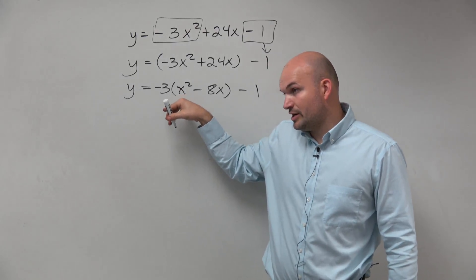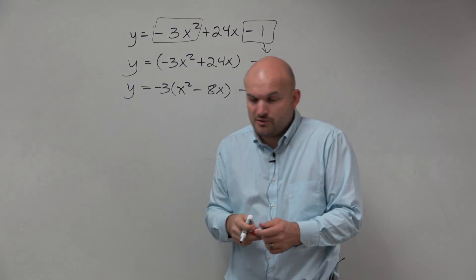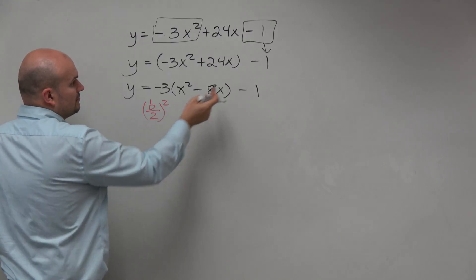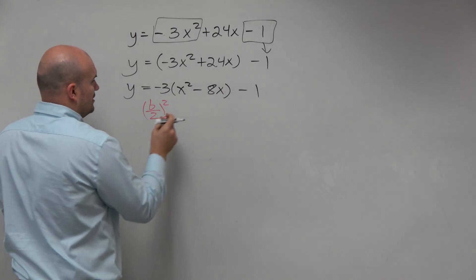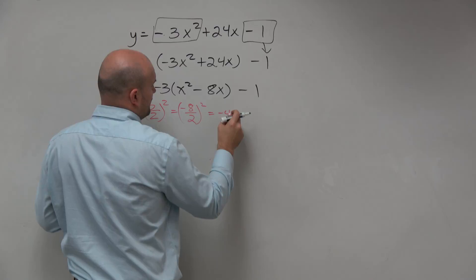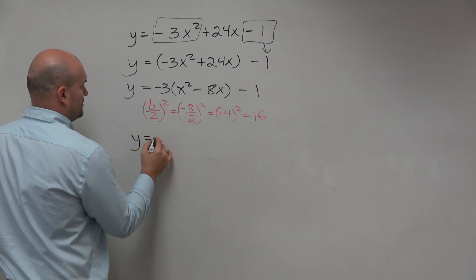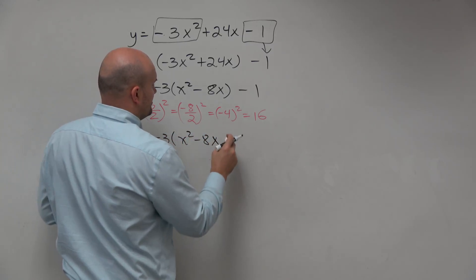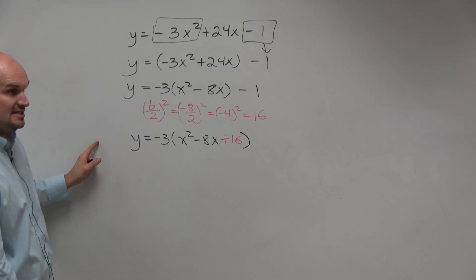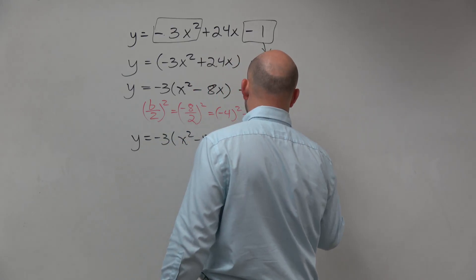Now I just have a squared term. And now what I need to do is find my other squared term. The process of finding that other squared term is to take b, divide it by 2, and square it. B is the coefficient of your linear term, which in this case is negative 8 over 2, squared — which equals negative 4 squared, which equals 16. So now I have y equals negative 3 times the quantity x squared minus 8x plus 16. Remember, if you're going to add 16 on the right side, you have to add 16 to the left side, or you subtract 16 on the same side.